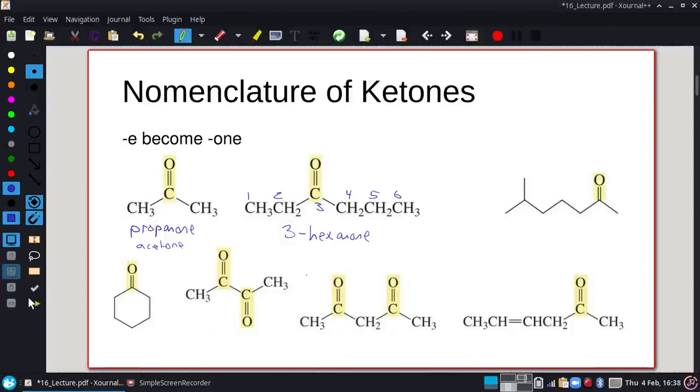All right. When we have a long backbone, I want to number it so the carbonyl has the lowest possible number. So we have a 6-methyl-2-heptanone. Only one substituent, so I don't number it. Cyclohexanone.